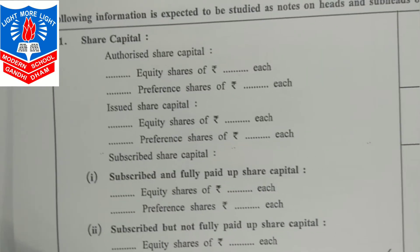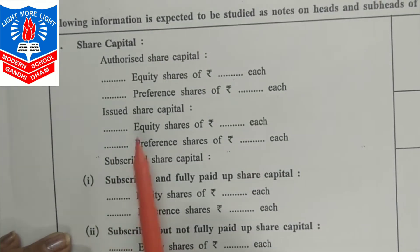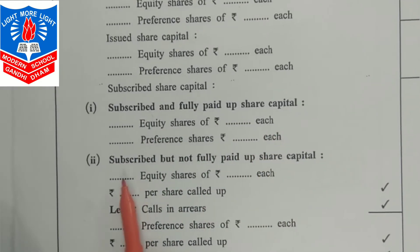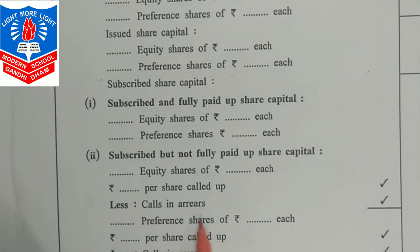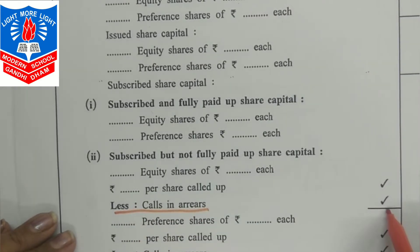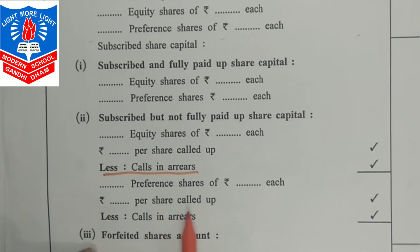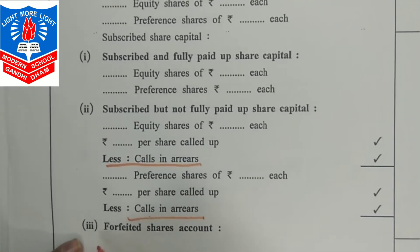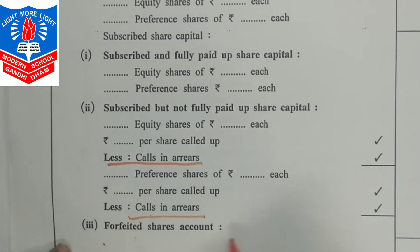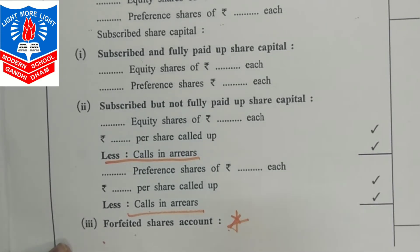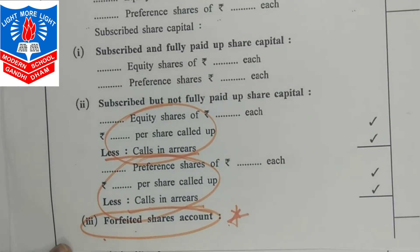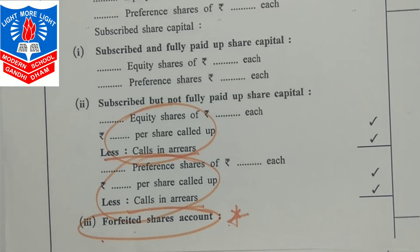Under shareholders' fund, share capital includes: authorized share capital, issued share capital, subscribed and fully paid-up share capital, and subscribed but not fully paid-up share capital. Call-in arrears are adjusted here if not paid. Preference share capital is also included, and any call-in arrears for preference shares are adjusted here. The share forfeiture account also appears under share capital.